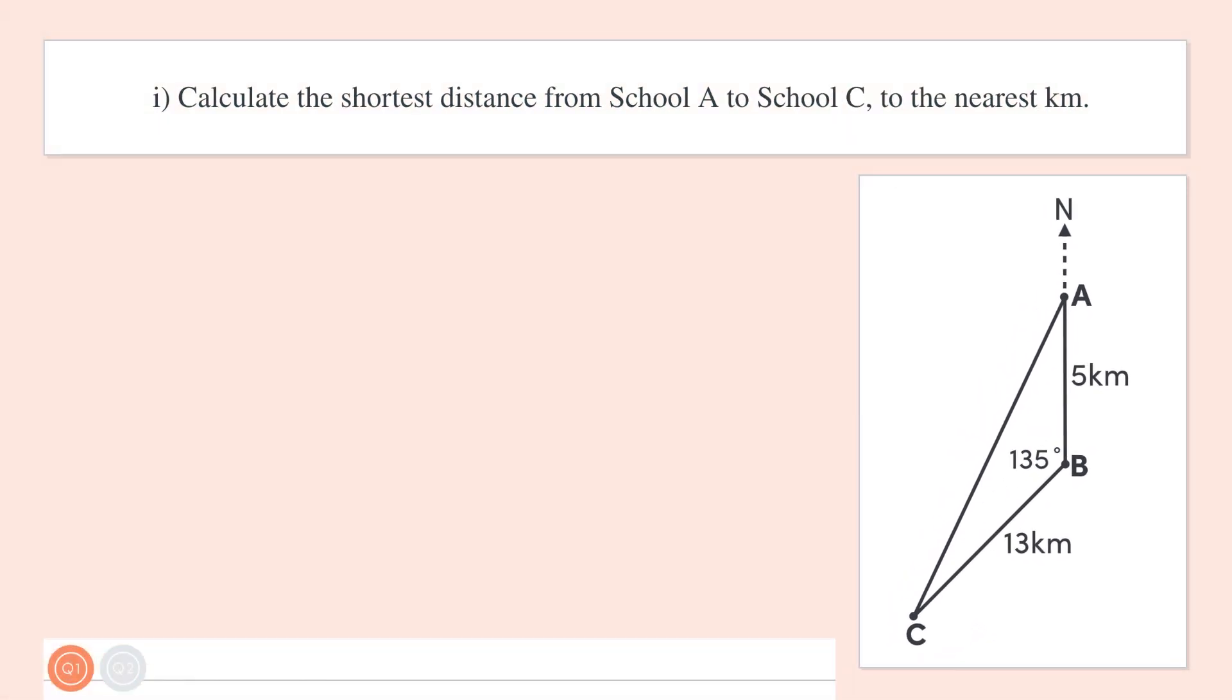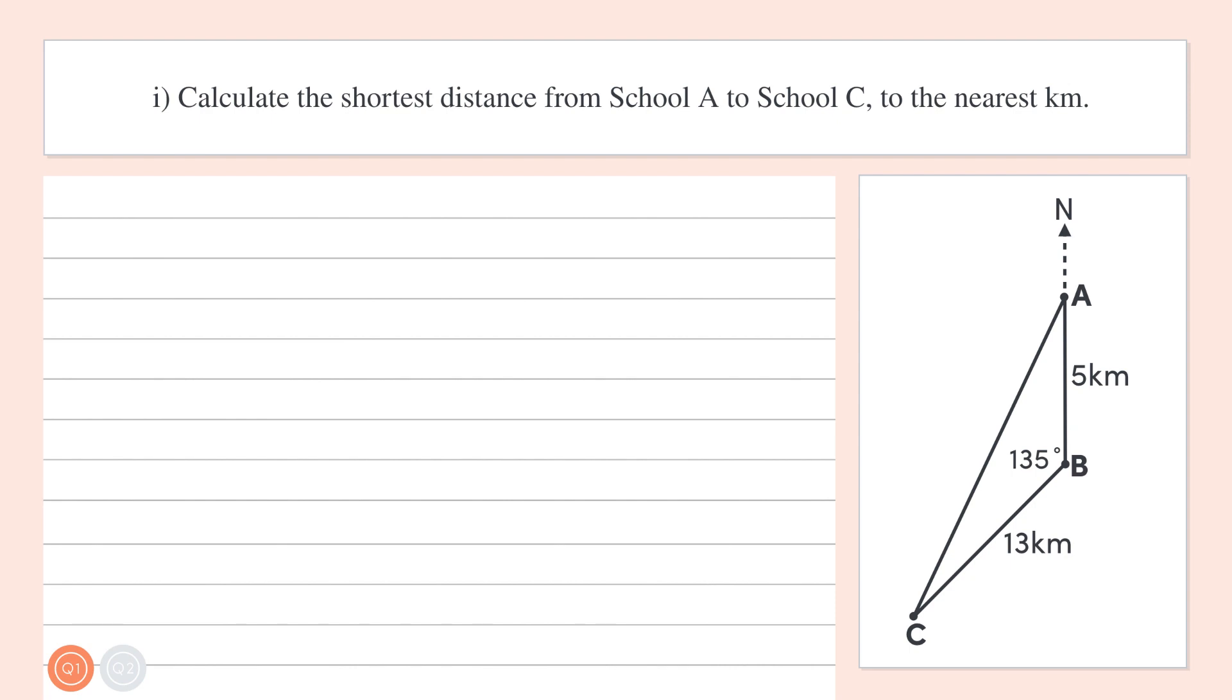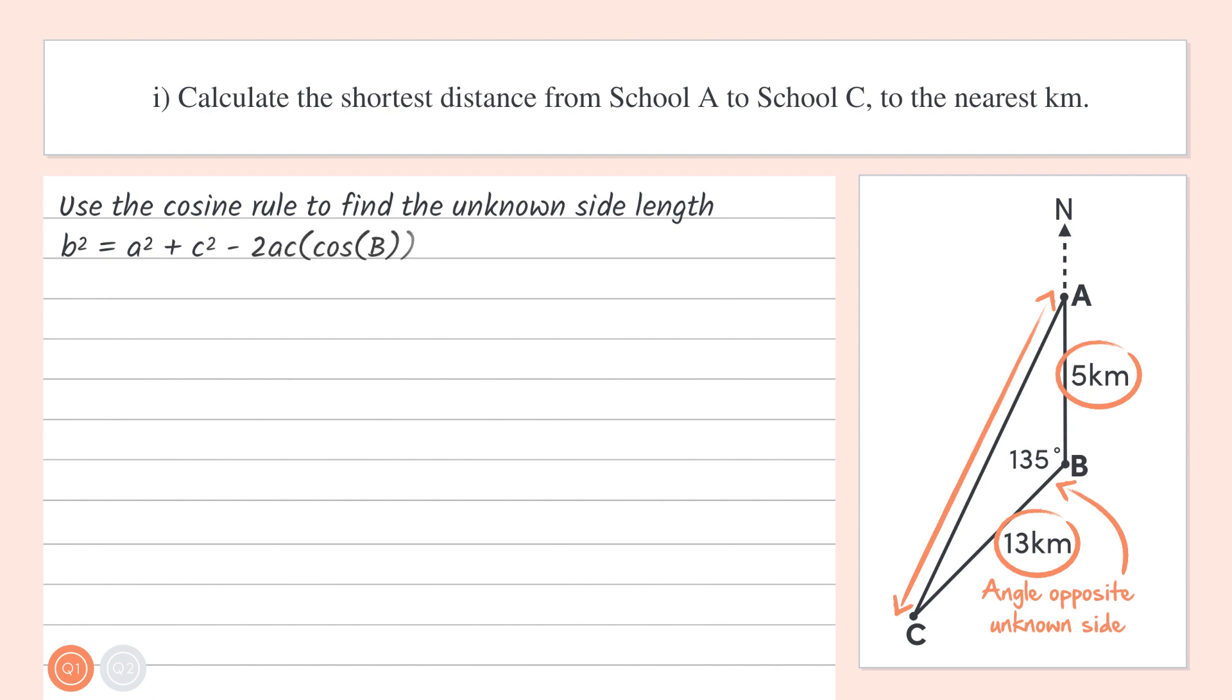Okay, let's get started on part one which is asking for the shortest distance between A and C, which is this side of the triangle, AC. Now what other information have we been given about this triangle? Well, we're told the angle opposite the unknown side, 135 degrees, and we're given the lengths of the remaining two sides, so 5km and 13km. So then the cosine rule for finding a side length would be a good choice of formula.